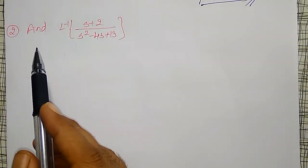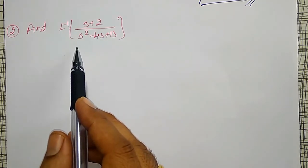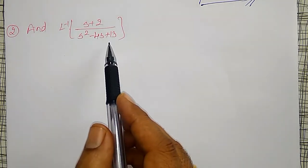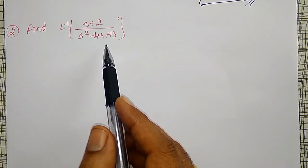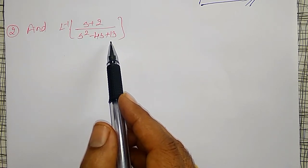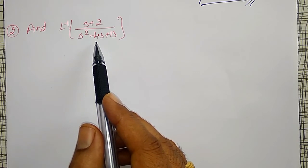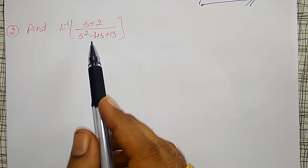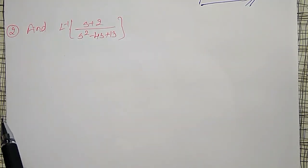Another example: find the Inverse Laplace Transform of s plus 2 divided by s squared minus 4s plus 13. Again, check the denominator for available factors. The multiplication should give 13 and addition or subtraction should give minus 4. Since 13 is a prime number, 13 times 1 is the only factorization, so I cannot get the required sum or difference. Therefore, I must make it a perfect square type.